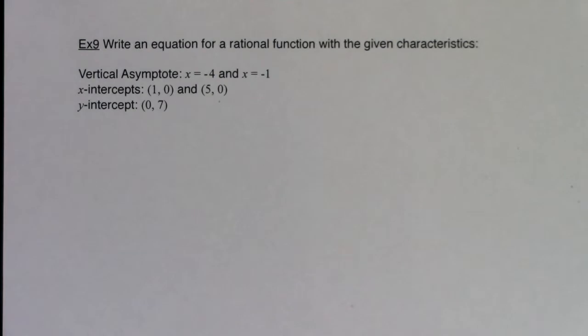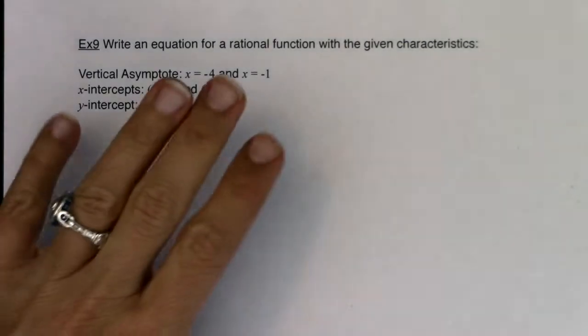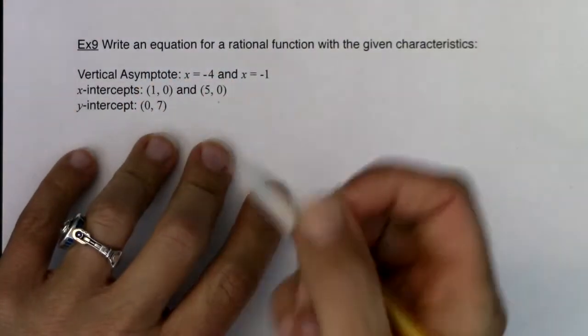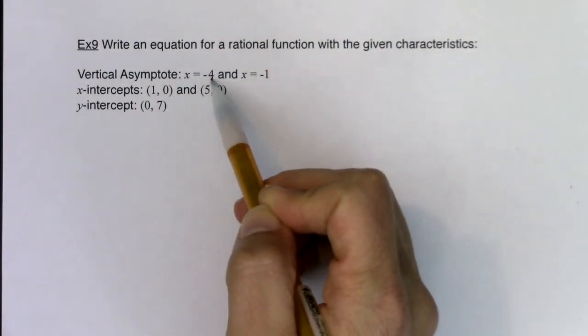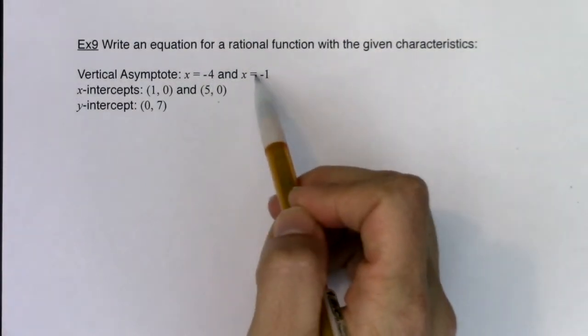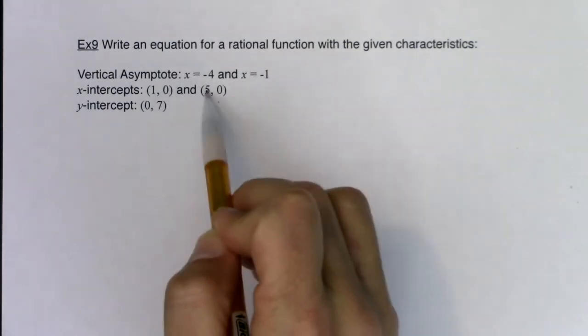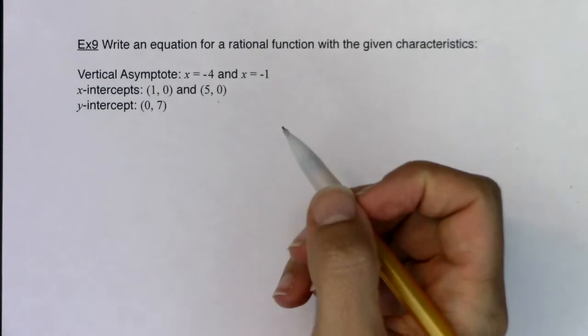All right, Math 31, we're at the end. We're going to head backwards in Example 9. I'm going to ask you to write an equation for a rational function and I'm going to give you some traits. So I'm going to tell you there's a vertical asymptote at x equaling negative 4 and x equaling negative 1. I have two x-intercepts at 1 and 5, and then I have a y-intercept at 0, 7.